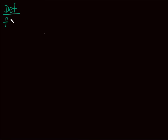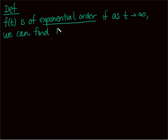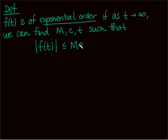The last thing we need to talk about is when does a Laplace transform exist. I want to define what we call exponential order. We say that f of t is of exponential order if, as t goes to infinity, there exist constants M, c, and T such that the absolute value of f of t is less than or equal to M times e to the ct, for t greater than or equal to some capital T.